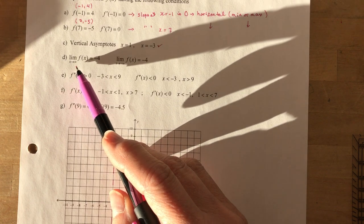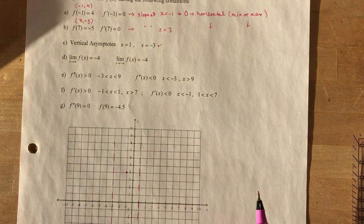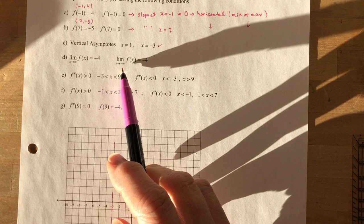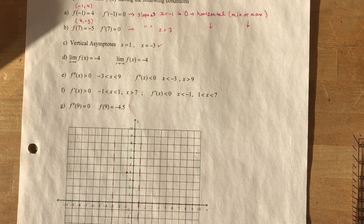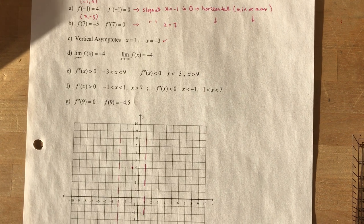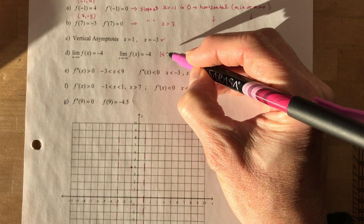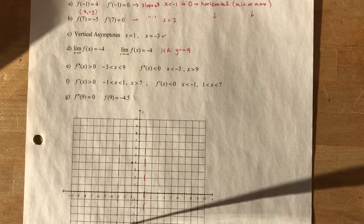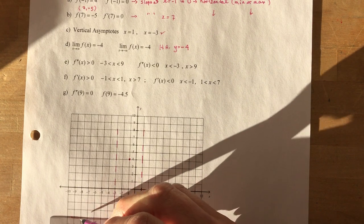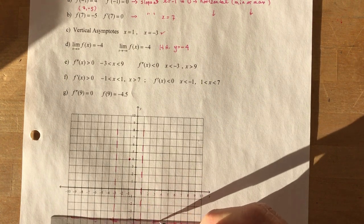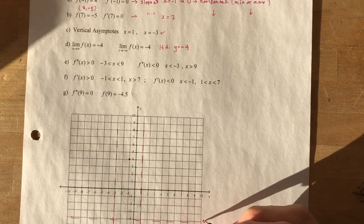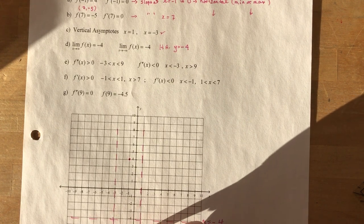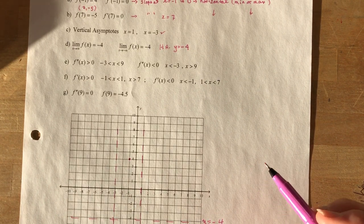The limit as x approaches infinity of the function is -4, and the limit as x approaches negative infinity is also -4. That's telling you there's a horizontal asymptote at y = -4. So we can put that on the graph as well. There's my y = -4, and I should label all of these: x = 1, x = -3, and y = -4.